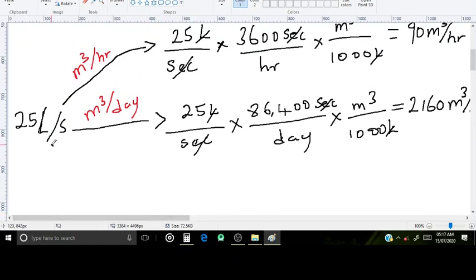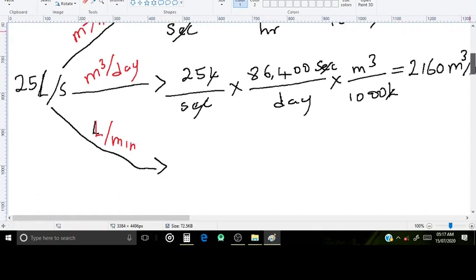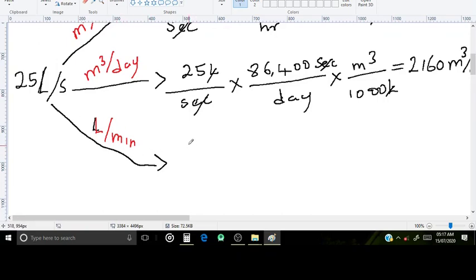Lastly, we have liters per minute. In order to convert to liters per minute, we have 25 liters over 1 second. Let's multiply it by 60 seconds over 1 minute. Because in every minute we have 60 seconds, in order to get rid of the seconds